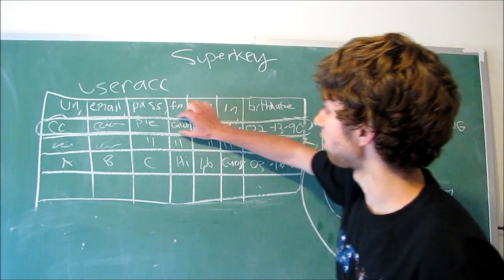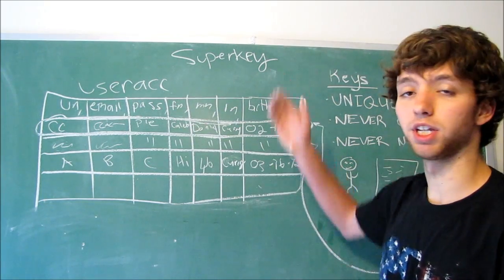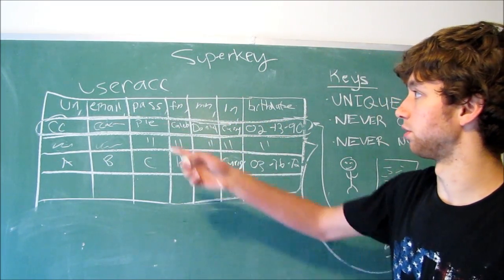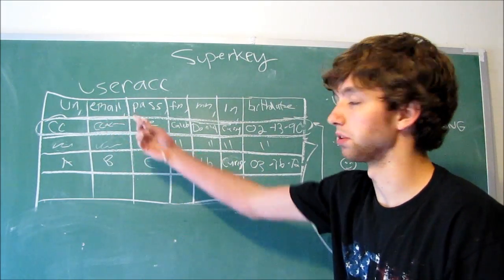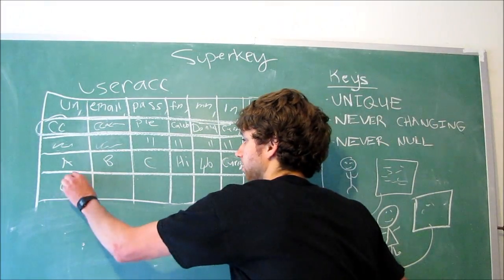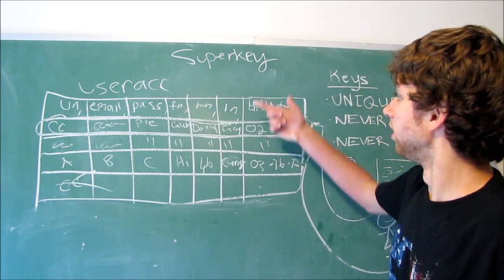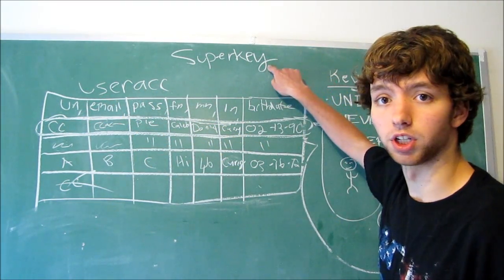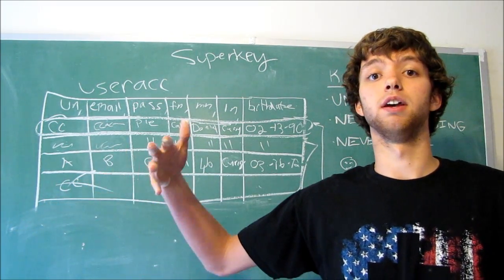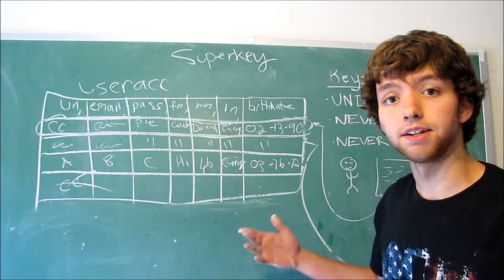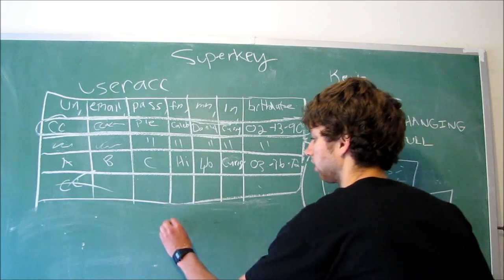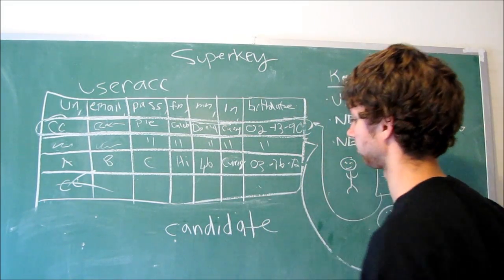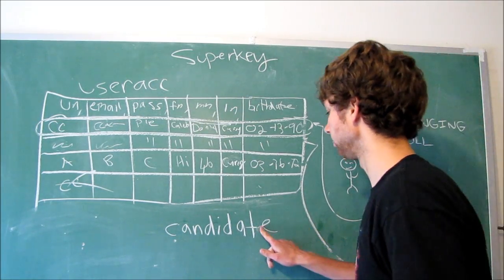So the super key could be all of these columns right here. Now super keys are usually not defined within the database. That's because they're so broad. You have all this information. Of course it's going to be unique, simply because you can only use a username one time. So all these extra columns are kind of unnecessary, because we could simply do that same thing with just the username. A candidate key is the least number of columns.